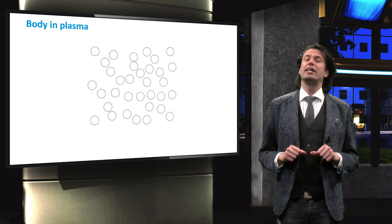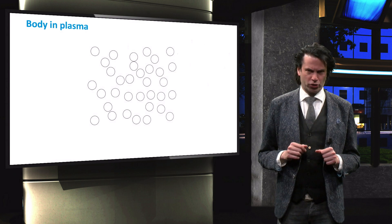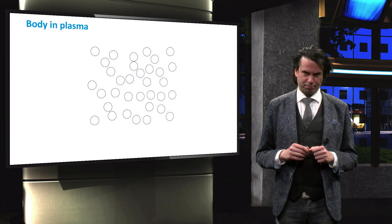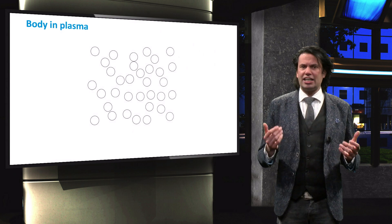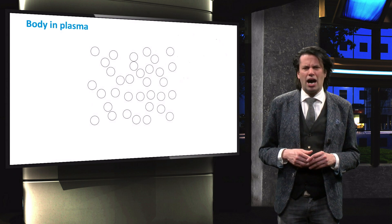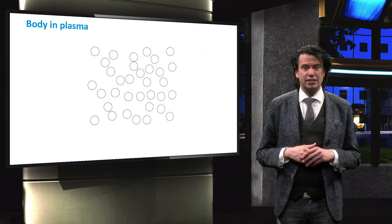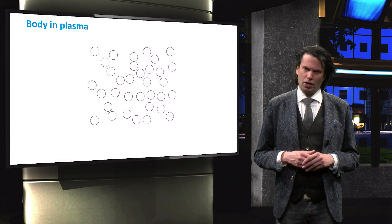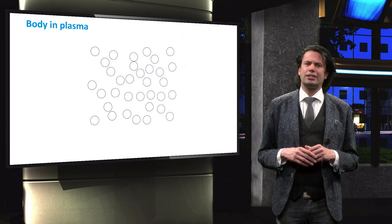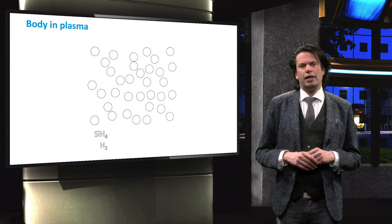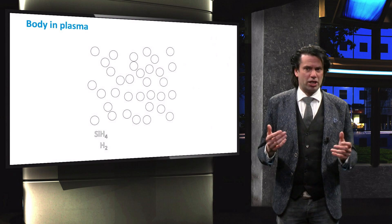It starts by introducing a mix of precursor gases to the vacuum chamber. Depending on the desired material, gases such as silane, methane, hydrogen and carbon dioxide can be introduced. For the deposition of, for instance, amorphous silicon, silane and hydrogen are used.